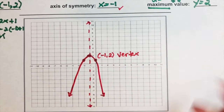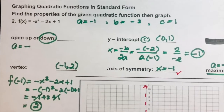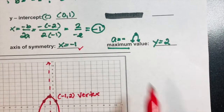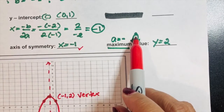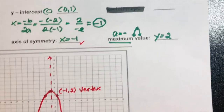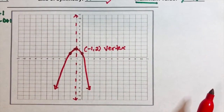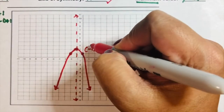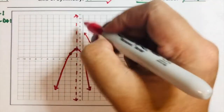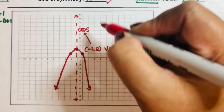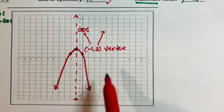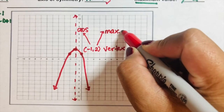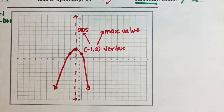Our answer is confirmed: when a is negative, the graph opens downward, and since the vertex is on top, we have a maximum value. Let us label: this is your vertex, this is your axis of symmetry x = -1, and the maximum value is positive 2.